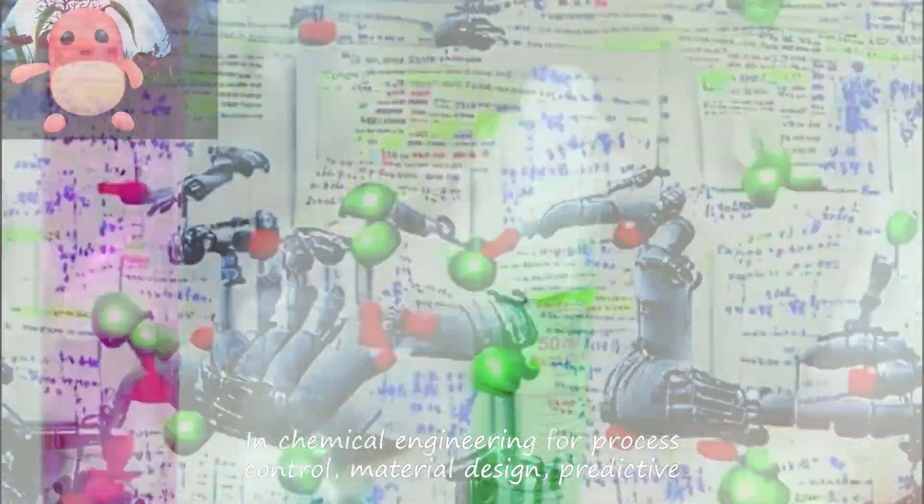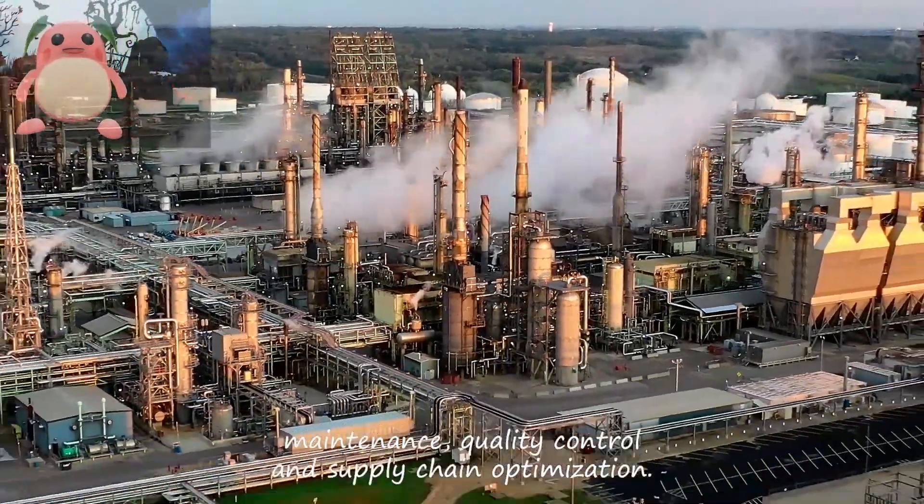In chemical engineering, AI is used for process control, material design, predictive maintenance, quality control, and supply chain optimization.